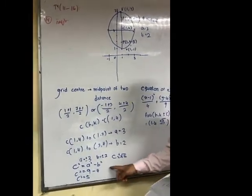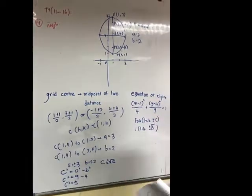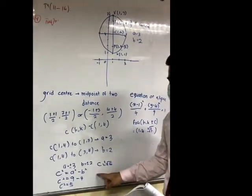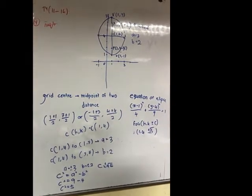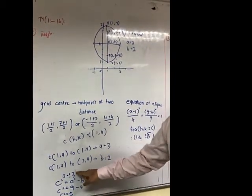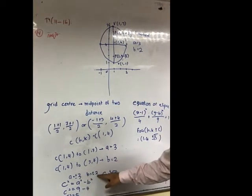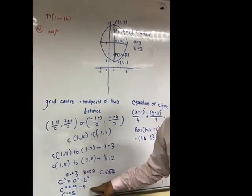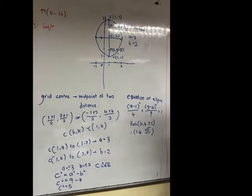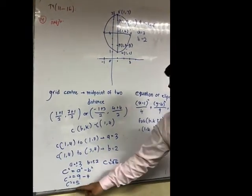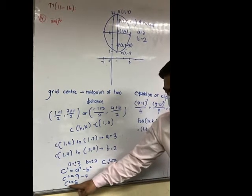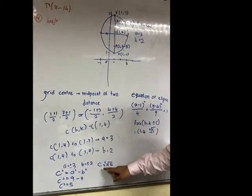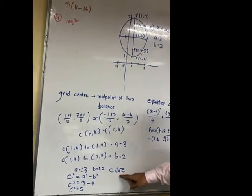So we use the formula C² = a² - b². So we get A = ±3, B = ±2. And we insert the value and get 9 - 4. So C² = 5 and we get C = ±√5.